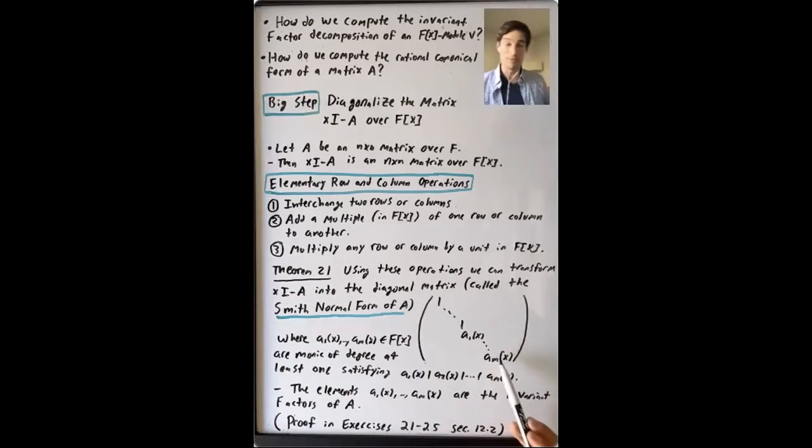And then the theorem is that not only can we diagonalize in this way, but these diagonal entries are meaningful. They are the invariant factors of A. So how do you compute the rational canonical form of a matrix A? Well, if you have this Smith normal form, then you know all the invariant factors, and you're pretty much done.